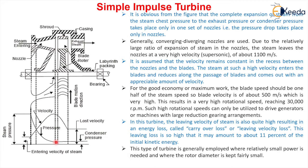According to Bernoulli's theorem, as pressure decreases in the nozzle, there is an increase in kinetic energy and accordingly an increase in velocity (kinetic energy = ½mv²). The velocity remains constant in the gap between the nozzle and the blade during the flow of steam through that passage.